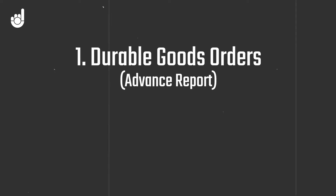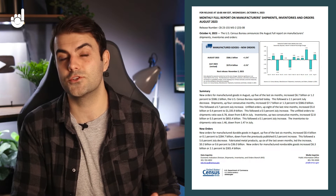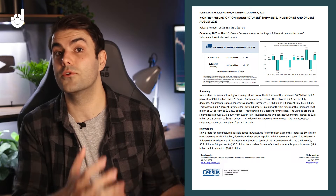Since durable goods are designed to last, they're often big ticket items, so quite expensive. Now Durable Goods Orders data is released twice. We have the Advanced Report with just Durable Goods Orders, and then the second release which comes alongside Factory Orders that contains revisions and more information.